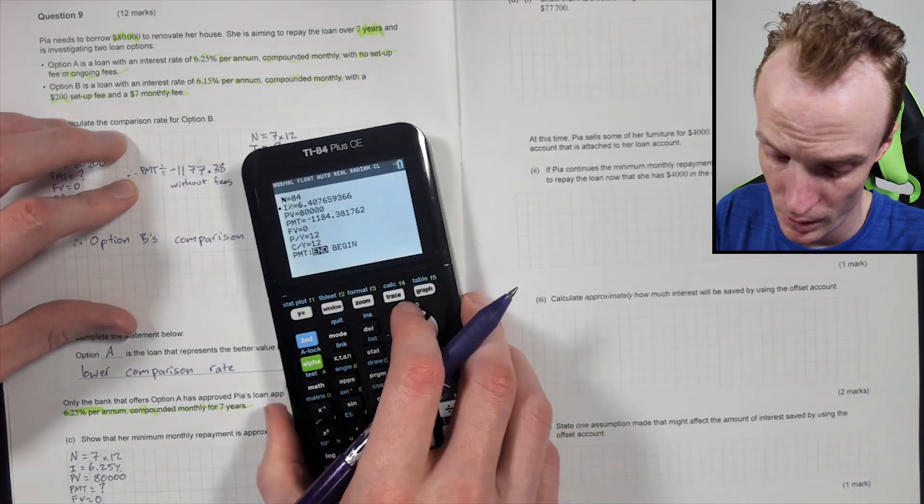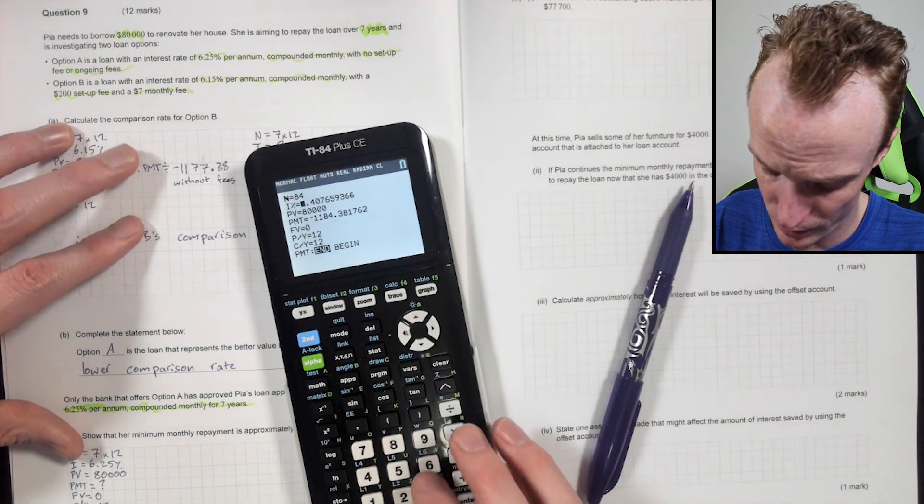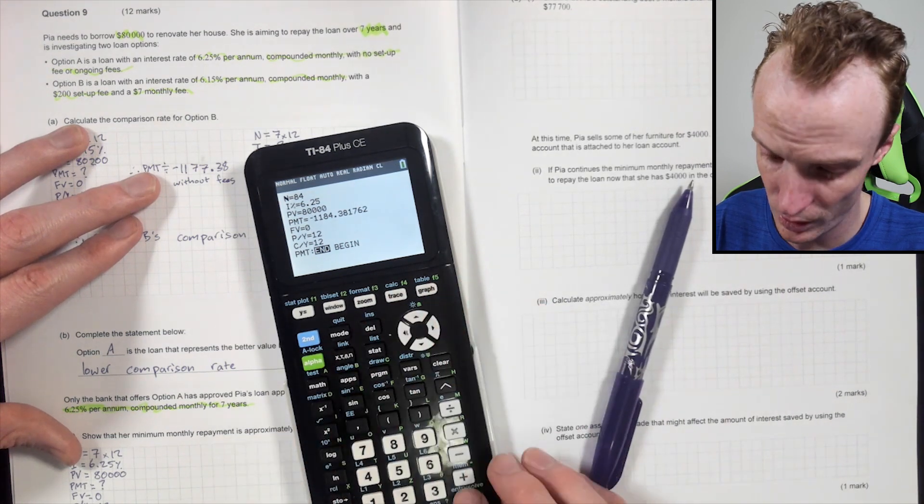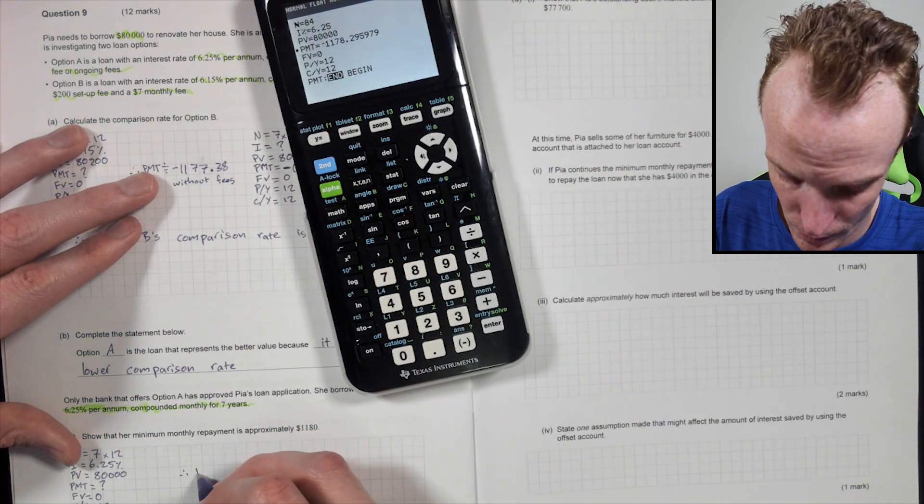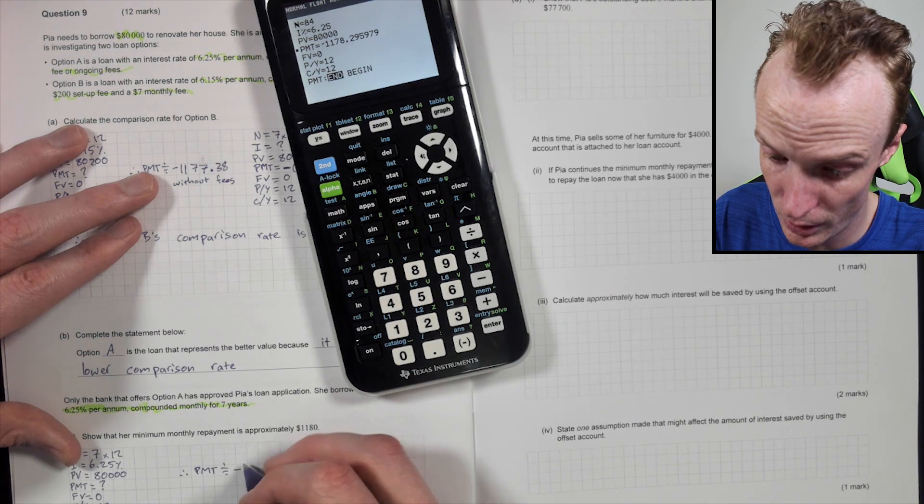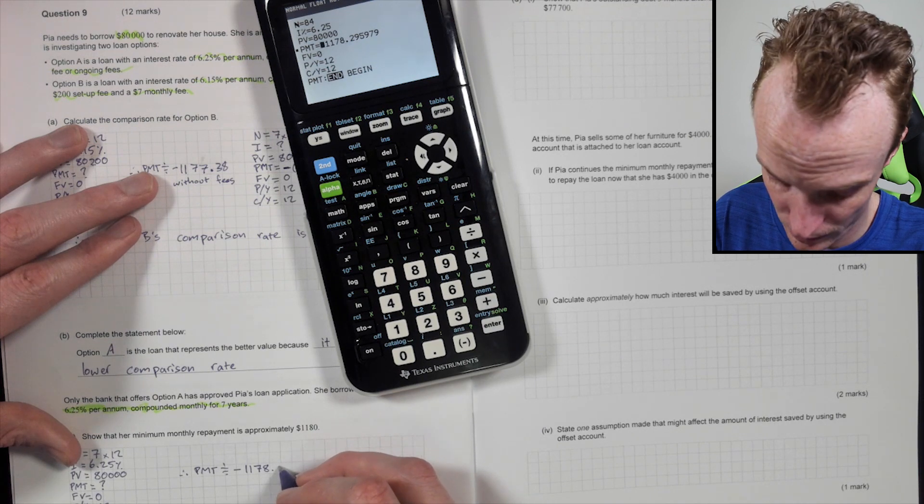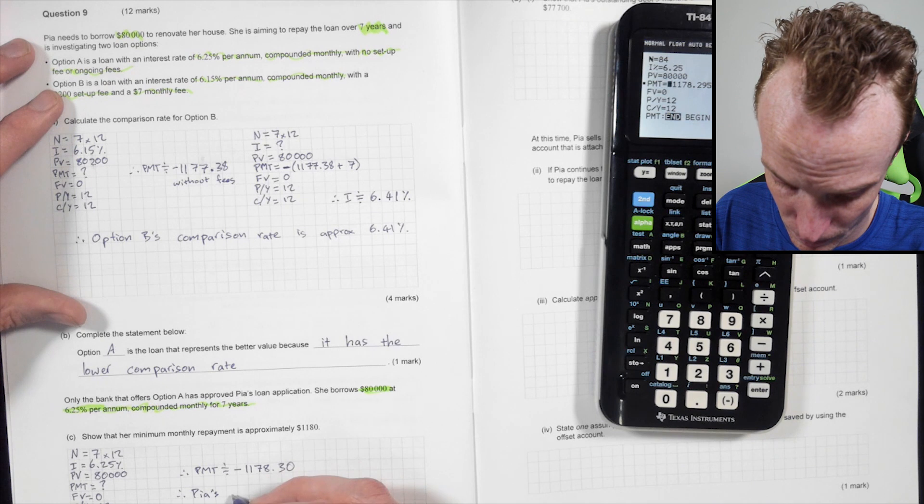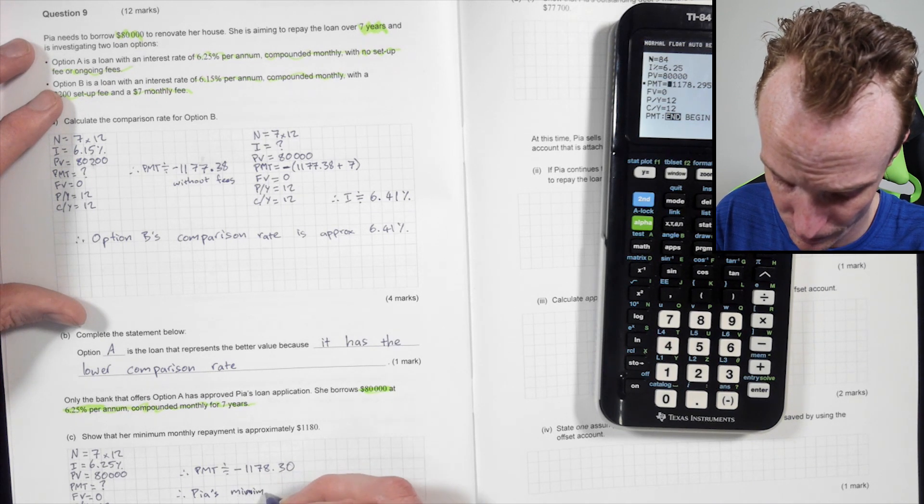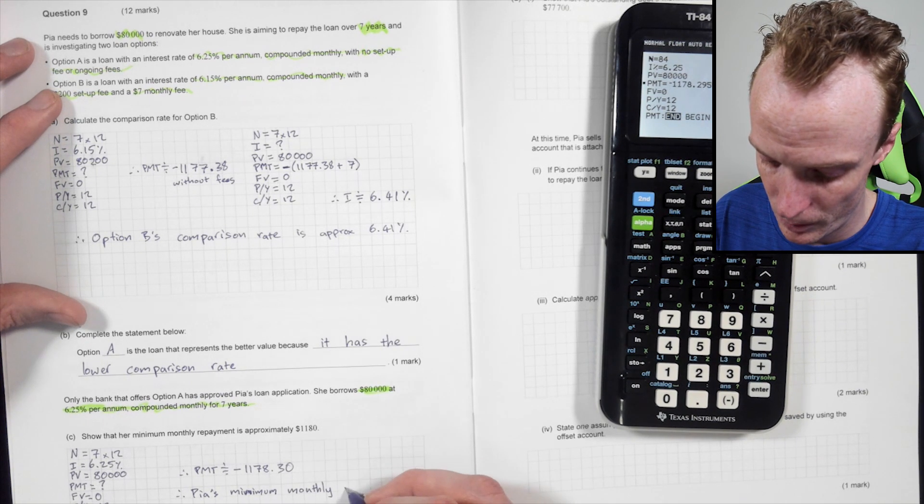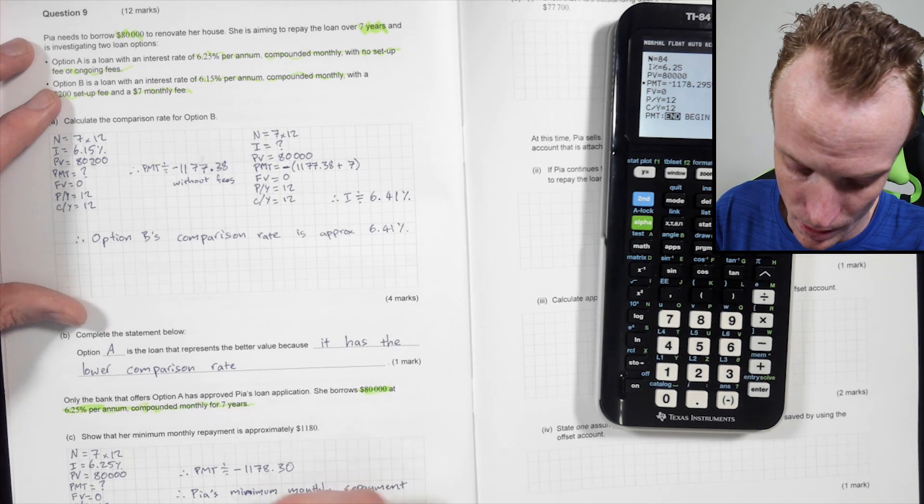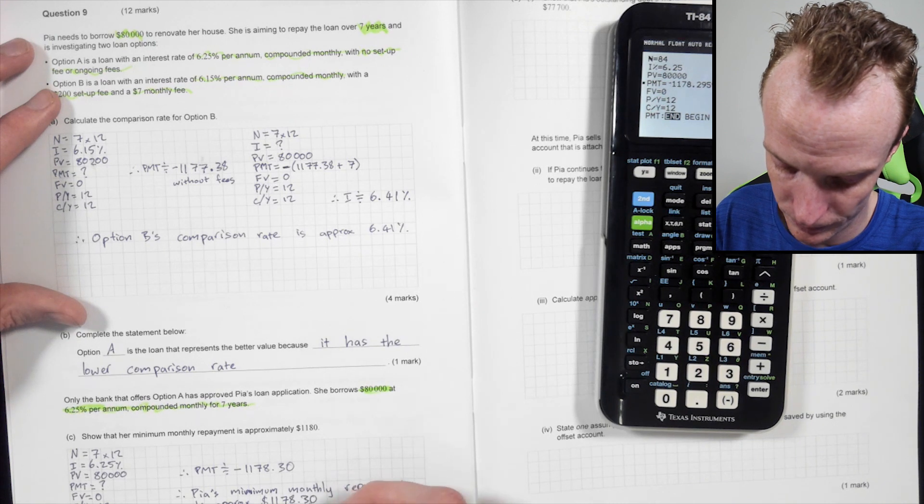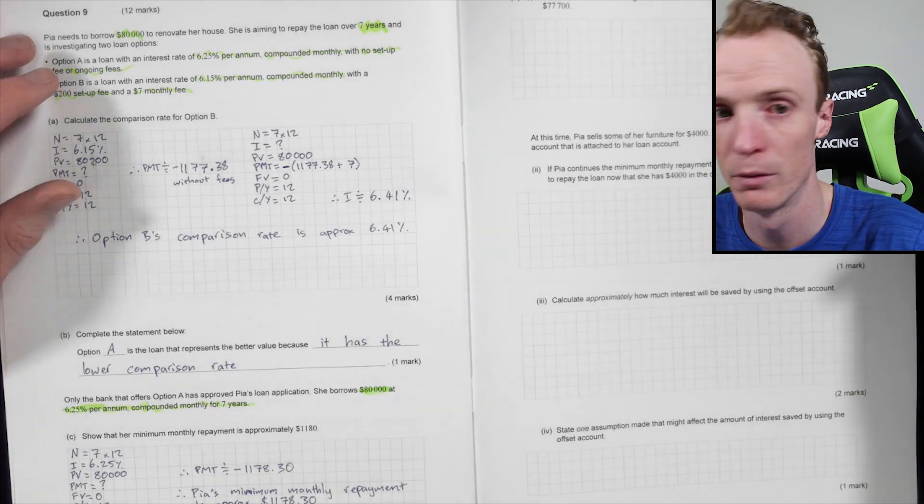So it's just TMV solver again. Seven by 12, interest rate 6.25. 80,000. PMT is what I'm after. 0, 12, 12. So PMT. So therefore PMT is approximately negative 1,178.30. So therefore Pia's minimum monthly repayment is approximately $1,178.30 cents, which is close to that, which means I've probably got that correct, which is always a good feeling.